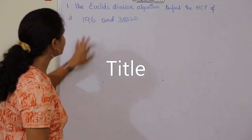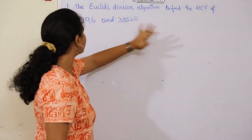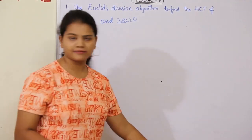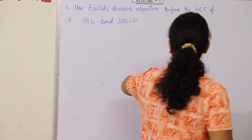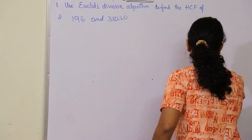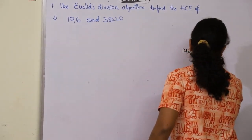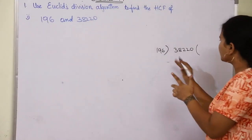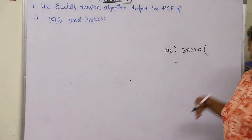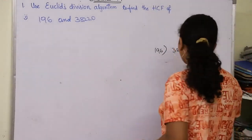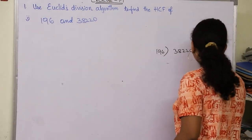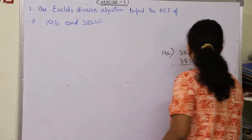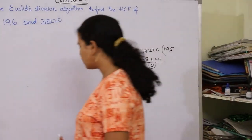Now here you have the second question: use Euclid's division algorithm to find the HCF of 196 and 38,220. First let's make a rough work — divide 38,220 by 196. You can easily see that 196 into 195 gives 38,220. So 196 times 195 gives 38,220, and therefore the remainder will be zero.